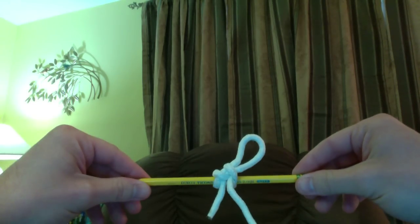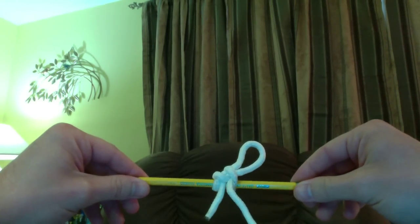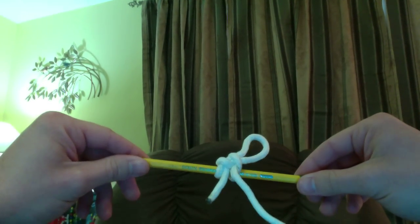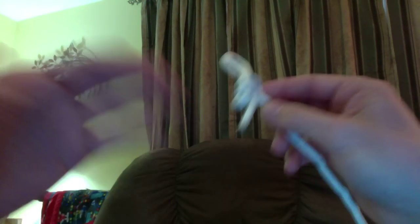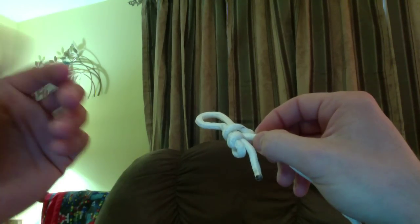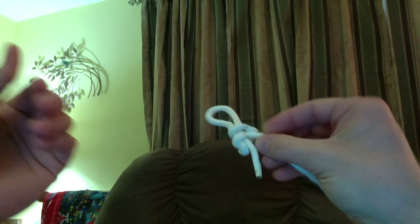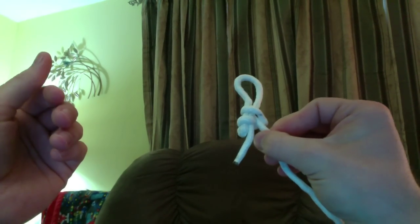If you are making a string knot below fourth octave C, you don't have to worry about using a string anchor, as the string is thick enough and the material is thick enough that you don't have to worry about the knot getting yanked through the sounding board. That's all there is to tying a harp string.